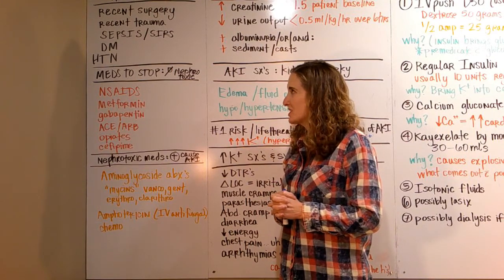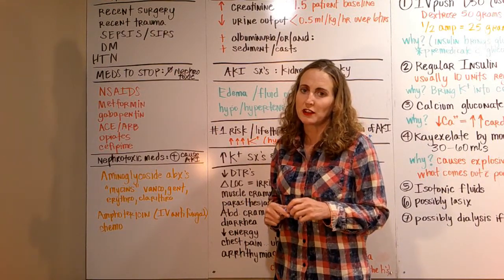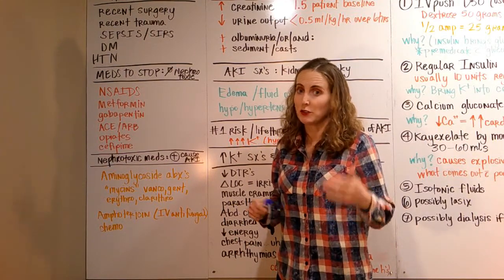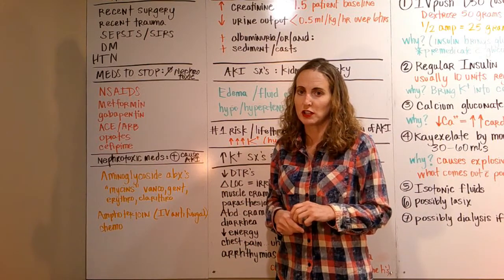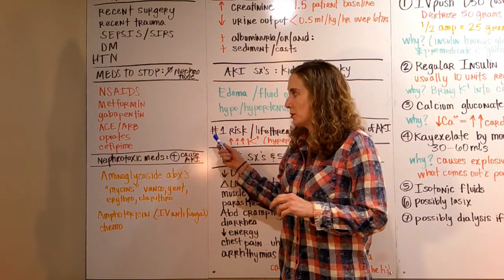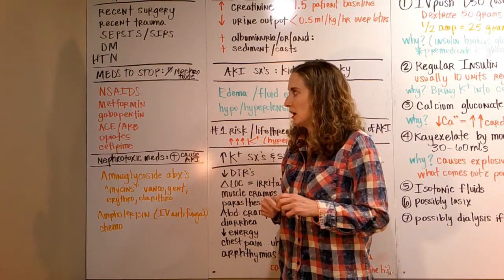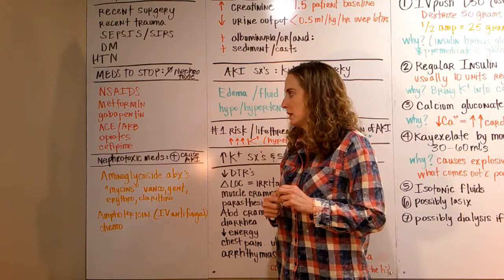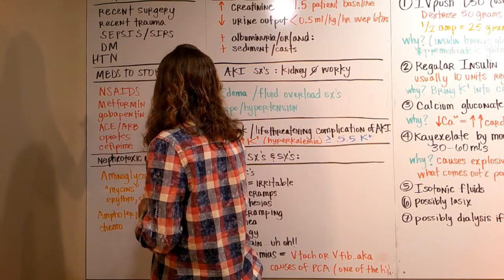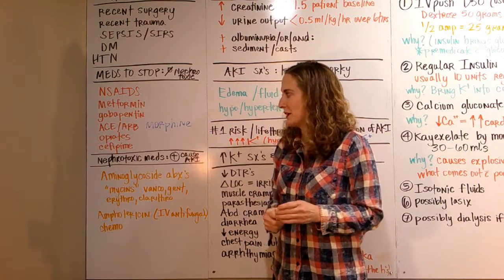Meds to stop: these are not nephrotoxic meds, but since they're excreted by the kidney, we should stop them until the kidney is better. NSAIDs are a big one, metformin—you can't take it when doing IV contrast—gabapentin, ACEs and ARBs, and then opiates, namely morphine but most opiates. Cefepime is one of the big cephalosporins that can exaggerate that.